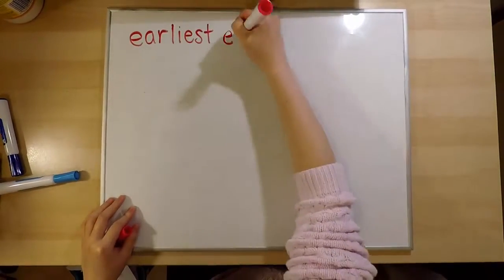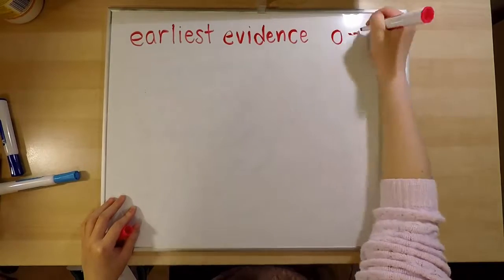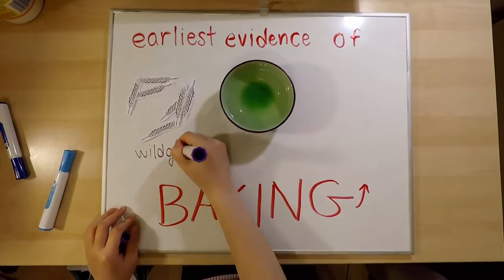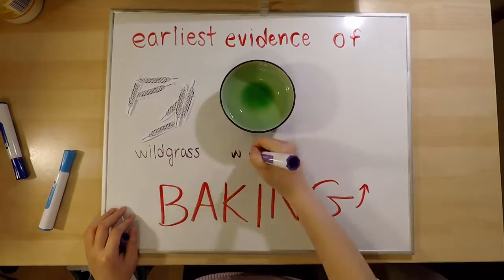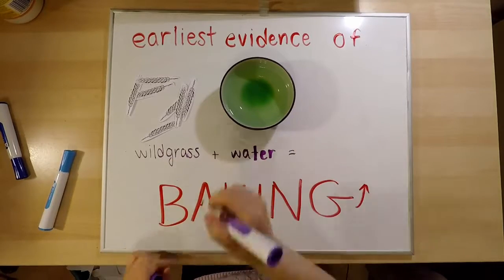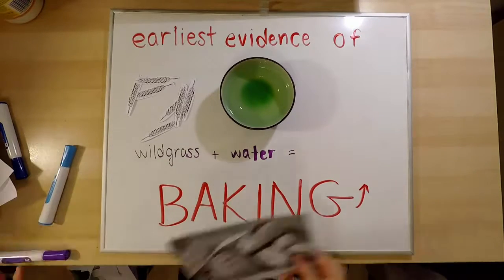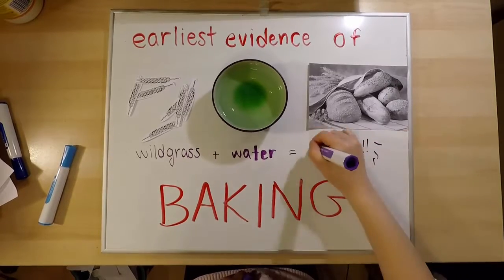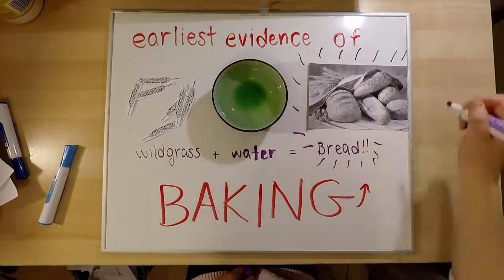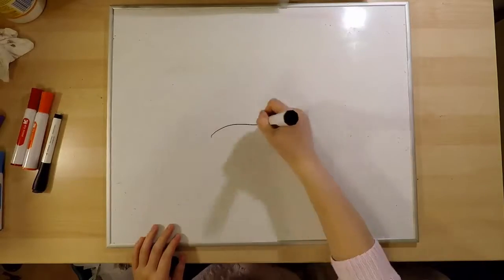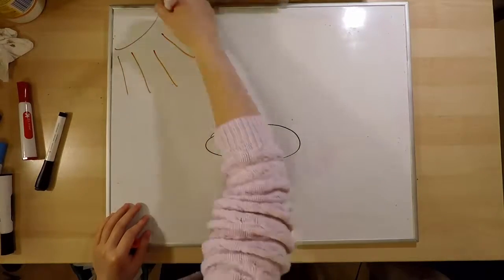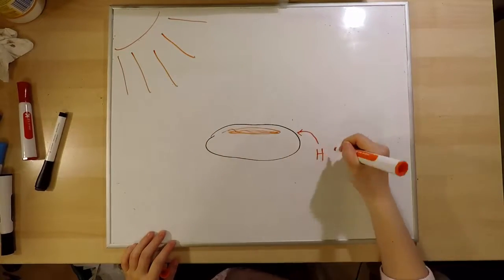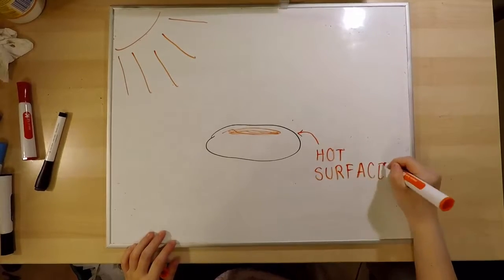The earliest evidence of baking happened when ancient humans mashed wild grass grains with water to create a sort of paste, and they poured it onto a rock and it became something that was bread-like, but probably not something that we would want to eat nowadays. They baked the first bread by putting the wild grass paste on a rock that had been sitting out in the hot sun and let it cook.